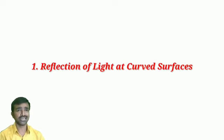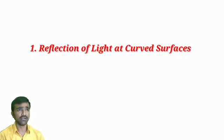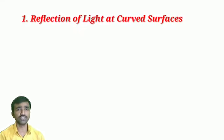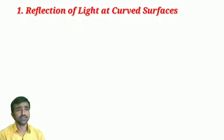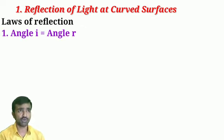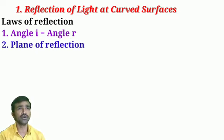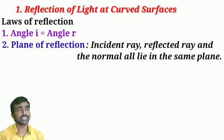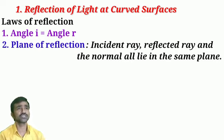Hello students, welcome to the class. Today I will discuss the law of reflection. There are two types of laws here: one is the law of reflection, which is about the angle of incidence and angle of reflection relation, and the other is the plane of reflection — meaning the incident light ray, reflected light ray, and the normal all lie in the same plane.